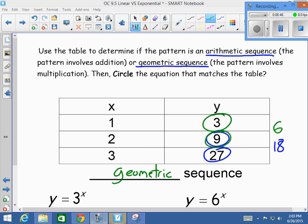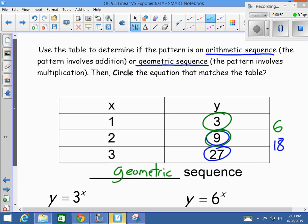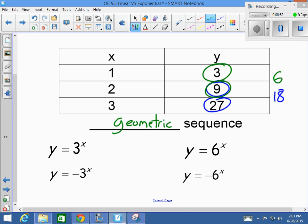Okay, let's read on. Then circle the equation that matches the table. All right, so first off, I know it's a geometric sequence. If it's a geometric sequence, it has to be an exponential function. Well, all four of them are exponential. That's great. Okay, so now I got to figure this out.